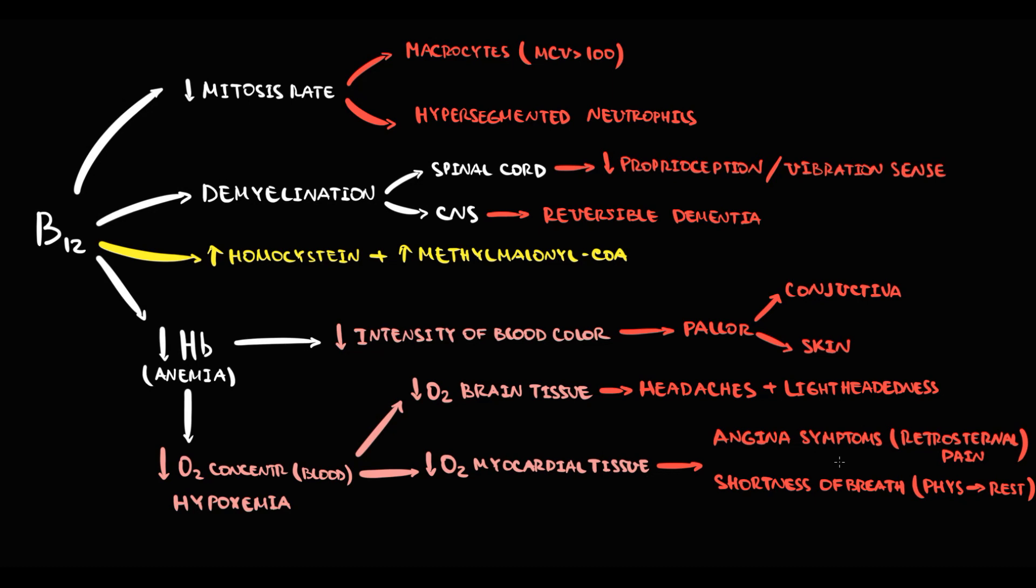Decreasing concentration of oxygen is immediately sensed by chemoreceptors. And in response to this, chemoreceptors increase the heart rate in order to increase oxygen delivery to peripheral tissues. So compensatory tachycardia develops.